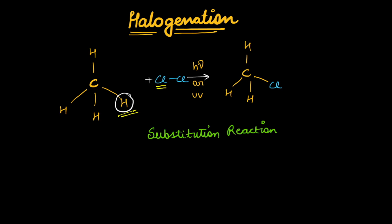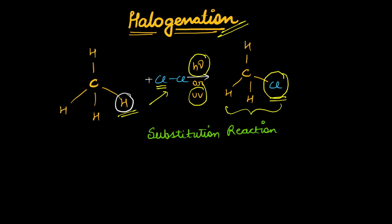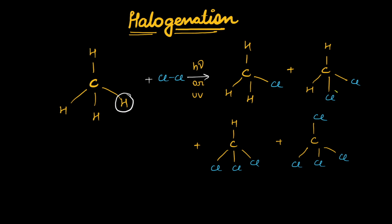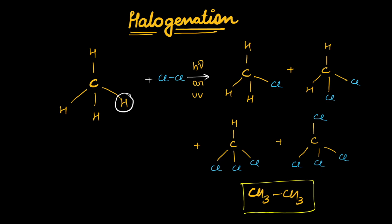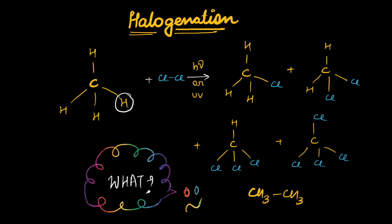The agenda of this halogenation reaction was to get one hydrogen replaced by one chlorine. We took Cl2 in the presence of light, H-nu, sunlight, or UV — ultraviolet rays. So the monochloro product was our agenda. What we observed was not just monochloromethane, but also dichloromethane, trichloromethane, and tetrachloromethane. And to our wonder, ethane also got formed — we were doing halogenation and we got ethane!